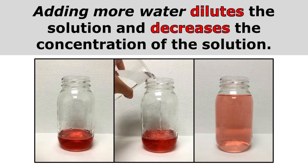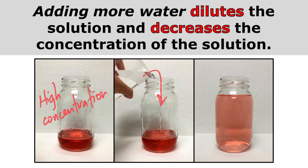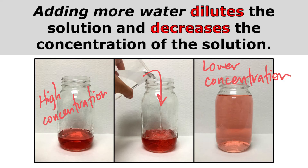Adding more water dilutes the solution and decreases the concentration. On the left, I have a solution with a very high concentration — you can see it's a dark red. As I add more water, I end up with a solution that has a lower concentration, and you can see it's a much lighter red. I have diluted the solution and made it less concentrated. So if you had a drink that was too sweet or too strong, you could add water to dilute it and decrease the concentration.